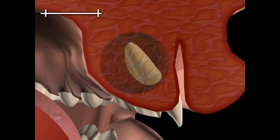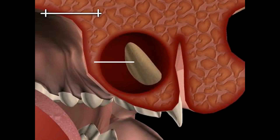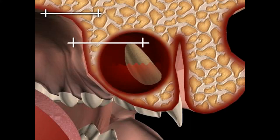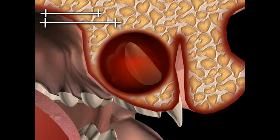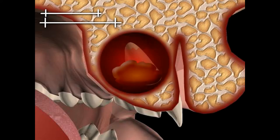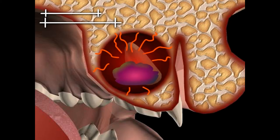The clot may contract to such a degree that it no longer touches the walls of the wound. In such a case, it is not possible for blood vessels to grow from the walls into the blood clot. This prevents the clot from being supplied with oxygen, nutrients, and finally with bone cells, which are an important prerequisite for the regeneration of the bone.